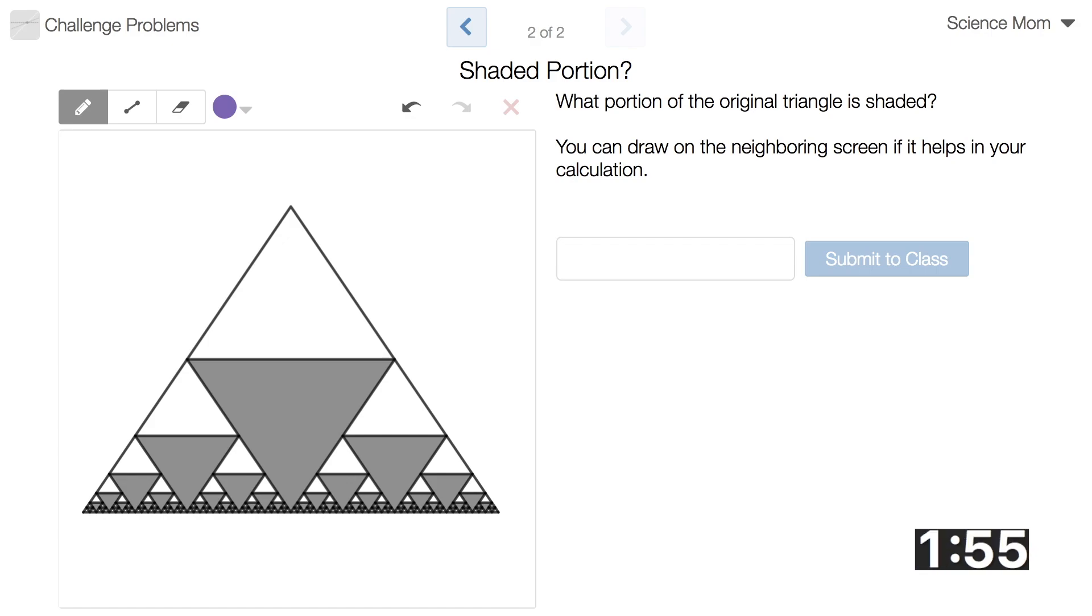All right, so what portion of the triangle is shaded? If I look at the big triangle and just that first section, I've got one-fourth that's shaded and one-fourth not shaded. And then the remaining half of the triangle, I've got this repeating pattern here.